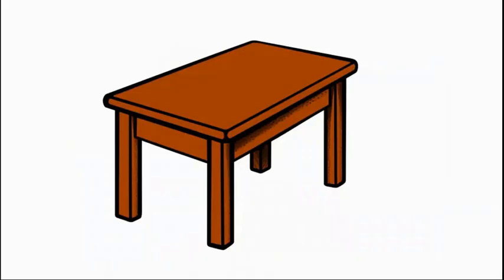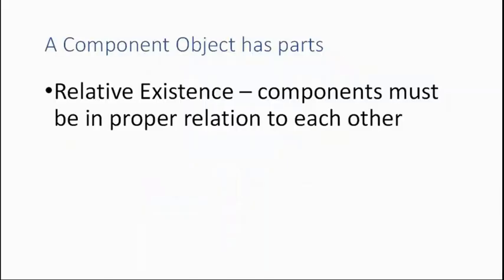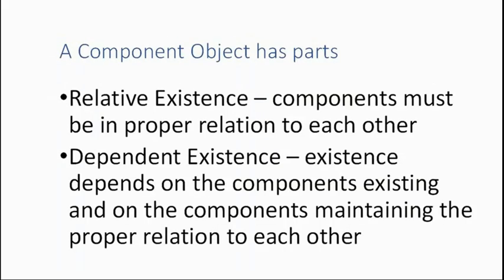Now component objects have what could be called relative existence because their components need to be in the proper relation relative to each other. The relation of the components is important as well as the components themselves. And because the table depends on its components and on their proper relation, we could say the table has dependent existence. Its existence depends on something. So we have component object, relative existence because the parts have to be in the proper relation to each other for the object to exist, and dependent existence.